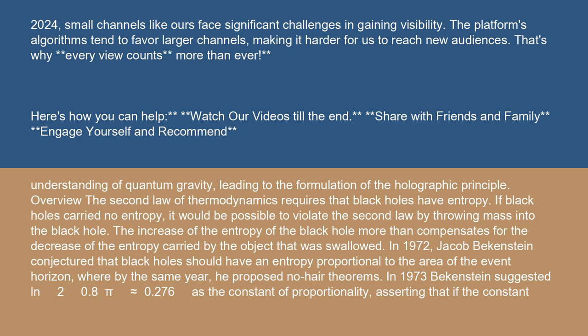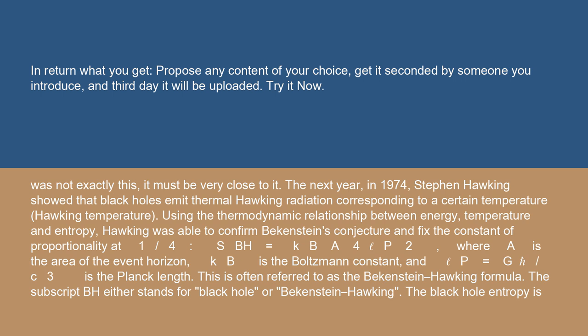In 1972, Jacob Bekenstein conjectured that black holes should have an entropy proportional to the area of the event horizon. In the same year, he proposed no-hair theorems. In 1973, Bekenstein suggested ln2÷8π ≈ 0.276 as the constant of proportionality, asserting that if the constant was not exactly this, it must be very close to it.